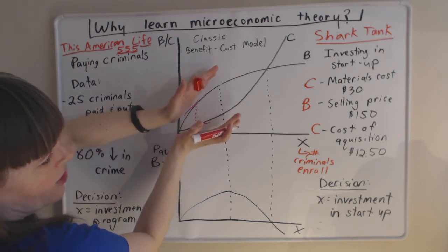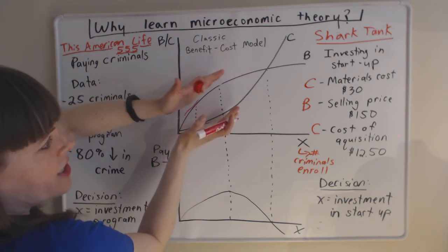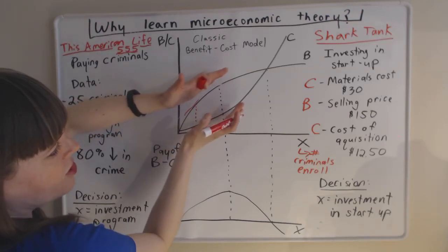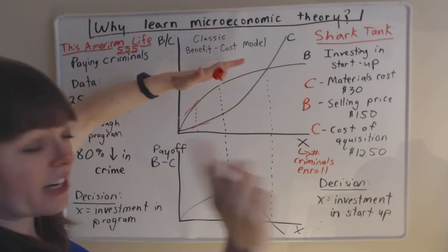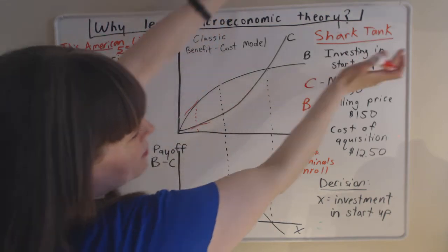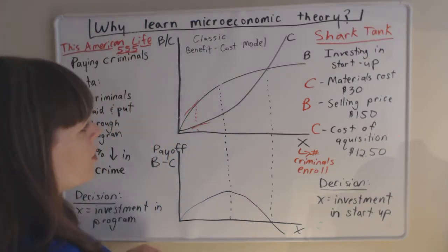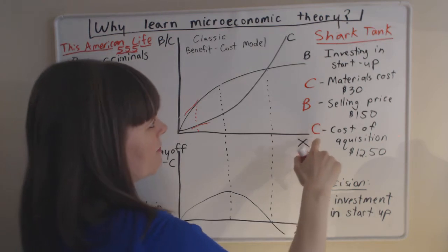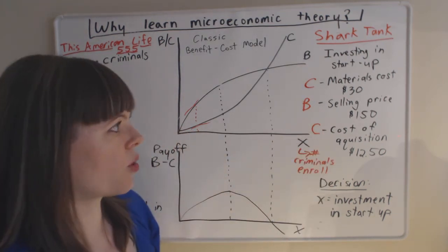If you don't take into account economic theory, which says these numbers eventually, the marginal benefit and marginal cost, eventually are going to change. And that change is going to drive your decision. If you don't think about that, the optimal investment is infinite. And we all know that's not reality.